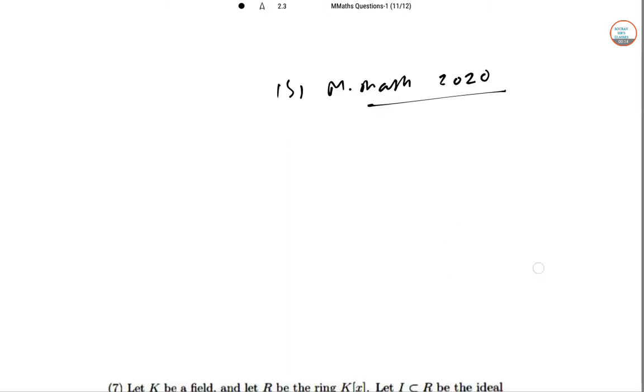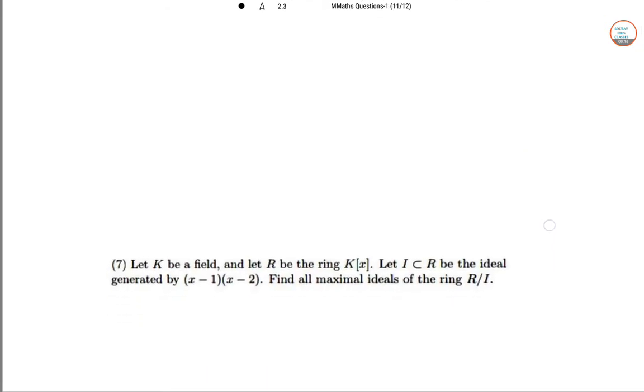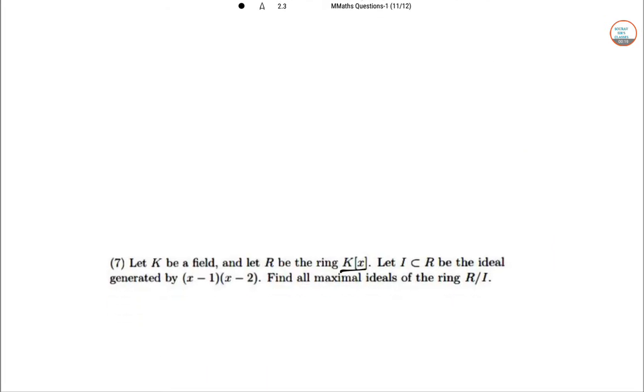It is a moderate level question. Let K be a field and R be the ring K[x]. Let I⊆R be the ideal generated by (x-1)(x-2). Find all the maximal ideals of the ring R/I.